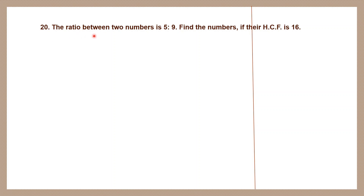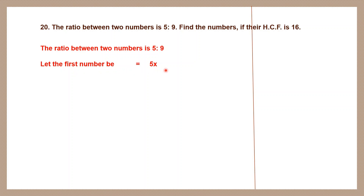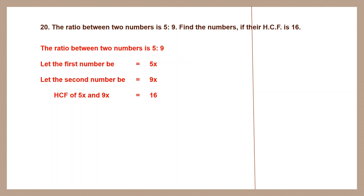Question 20. The ratio between two numbers is 5 is to 9. Find the numbers if their HCF is 16. Let the first number be 5x and the second number be 9x. HCF of 5x and 9x, according to the question, is 16. How do we find the HCF of 5x and 9x?